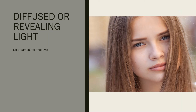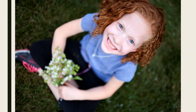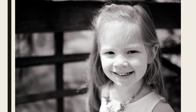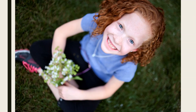Next we have diffused or revealing light. This is really popular for photographers because it creates no to almost no shadows whatsoever. Diffused or revealing light is best accomplished on a cloudy day during daytime, because the clouds are obstructing the sun so thickly that when you walk outside you'll notice there are no shadows. So to summarize: you want direct sunlight for strong shadows, directional diffused for minimal shadows, and diffused or revealing light for no shadows.